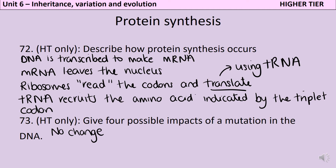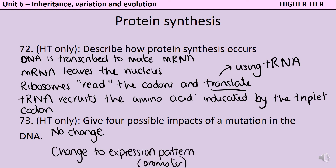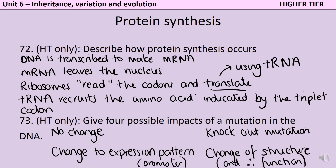The second thing that can happen is that while the protein may be the same, its expression pattern may change - it may be made more or less than before. This tends to happen when the mutation lies in a promoter region, a piece of DNA usually at the start of the gene which tells the cell how much of that protein to make. The third possibility is a knockout mutation, where the protein is damaged beyond repair and no functioning version is produced. The final outcome, which tends to lead to evolution but is incredibly rare, is a change of structure where the protein is still functional but no longer works in the same way as before.